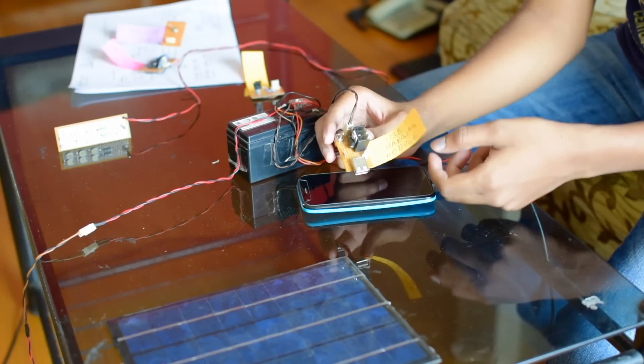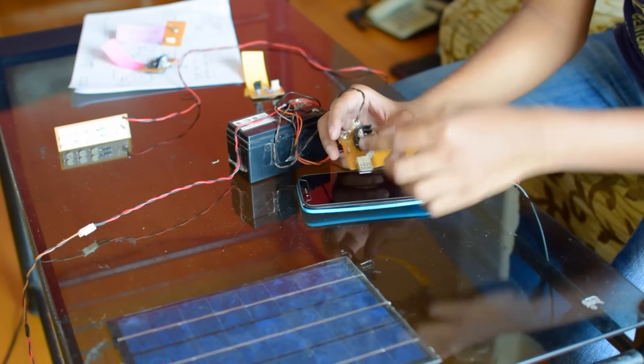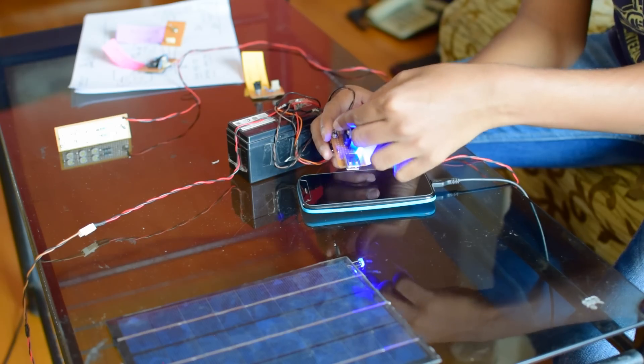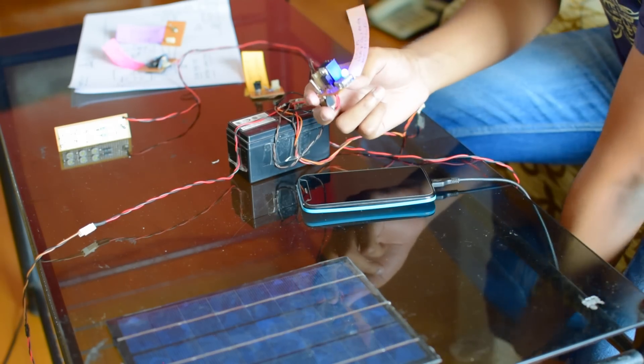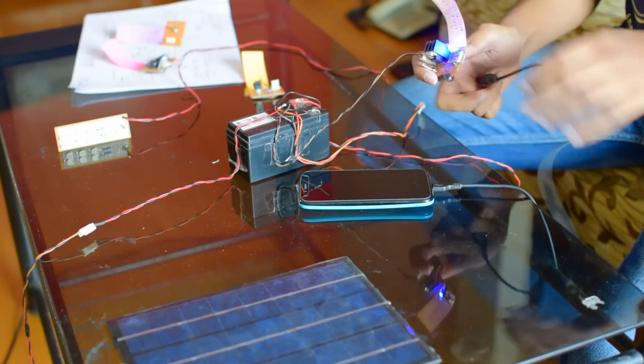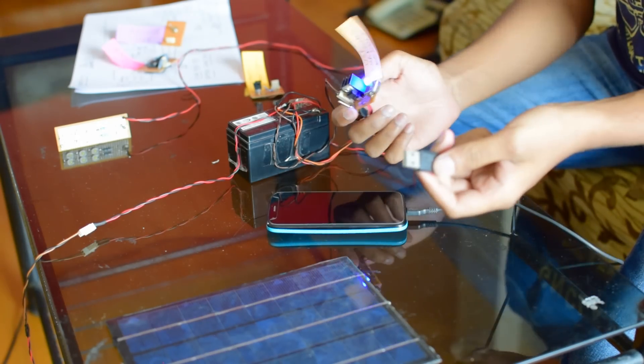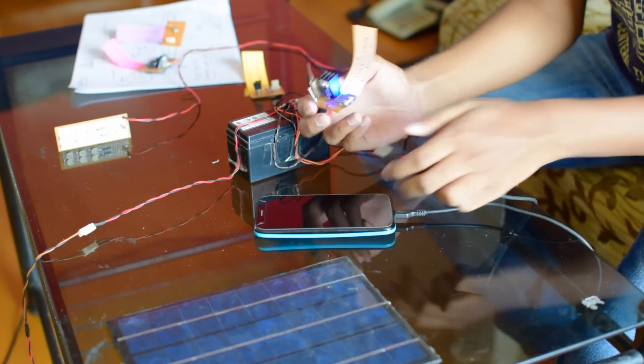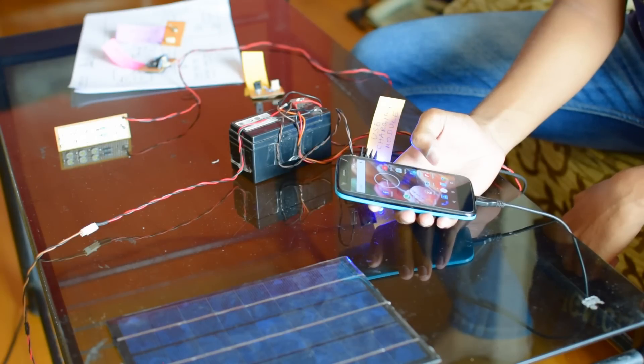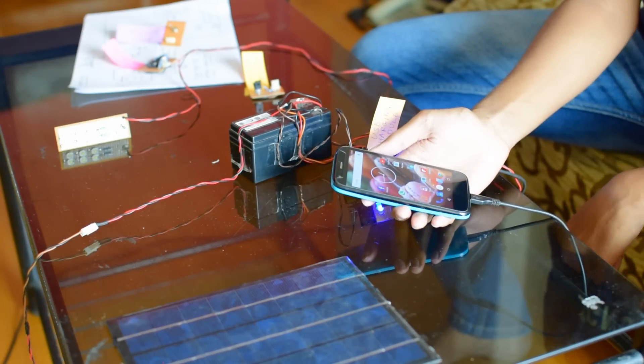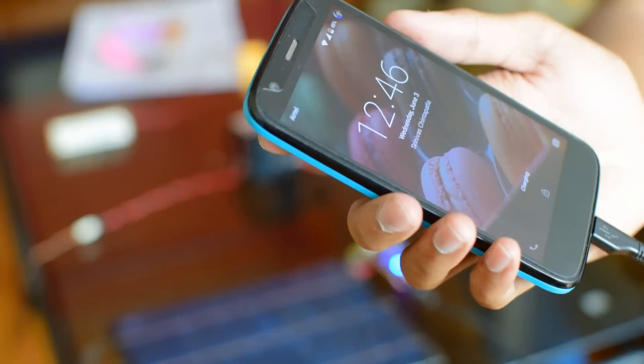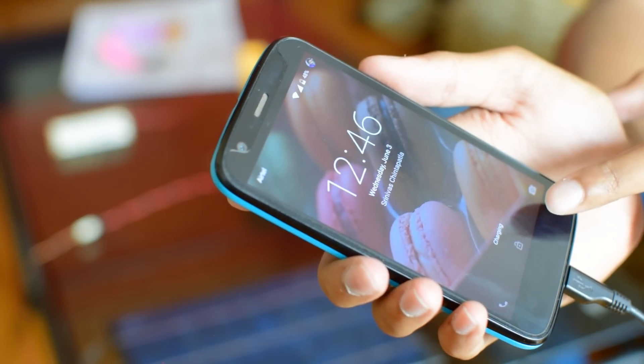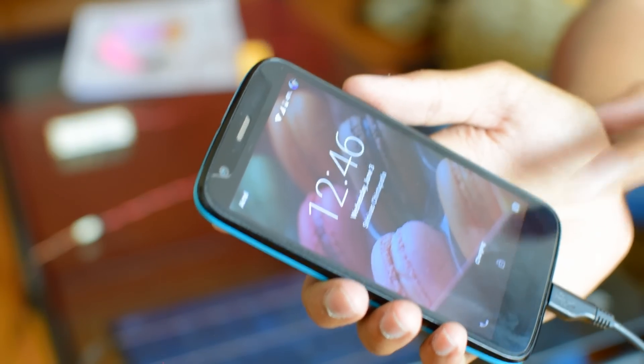Now I have connected the USB charging module to the battery. Now let us switch it on. Now I will show you how the phone is charging with this kit. I am connecting my phone with the help of this USB. You can see the phone has started charging already. You can see the phone indicating the charging over here. It is working perfectly.